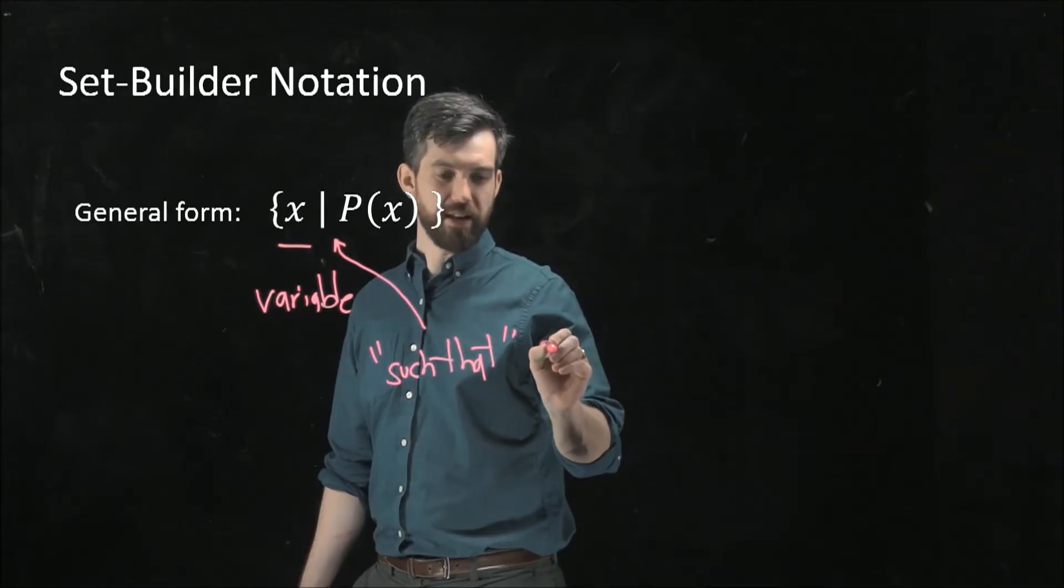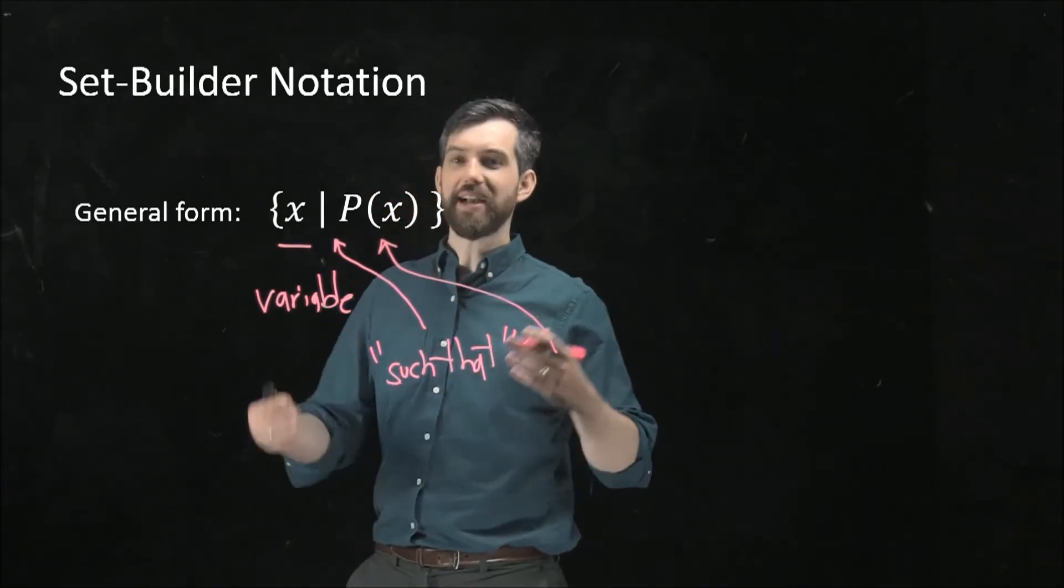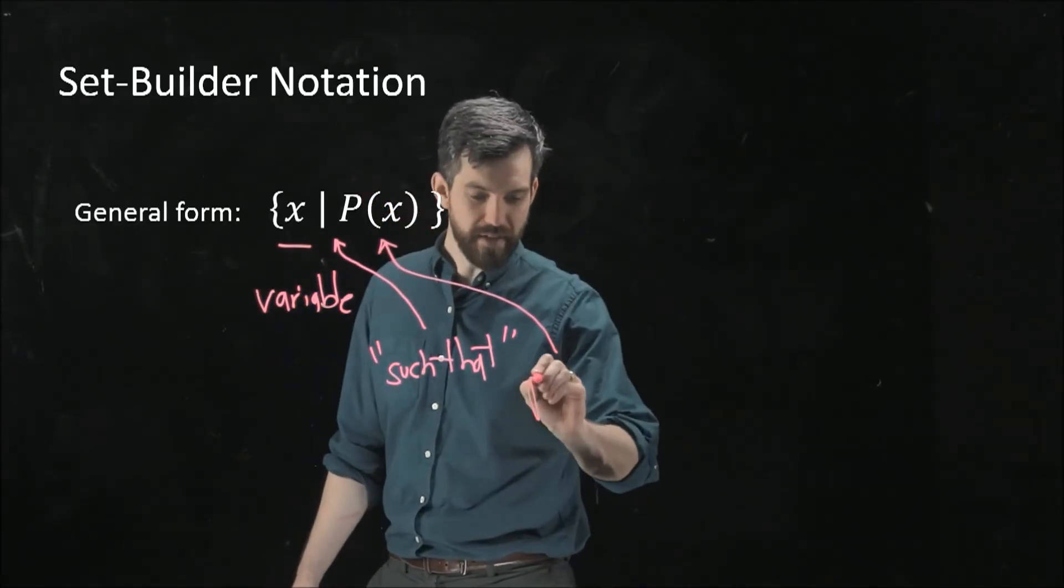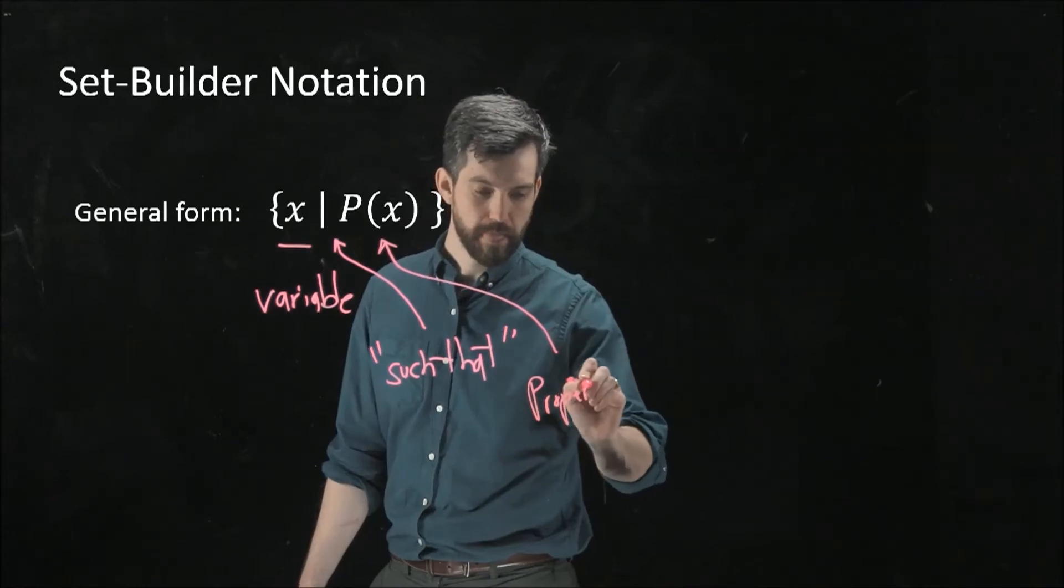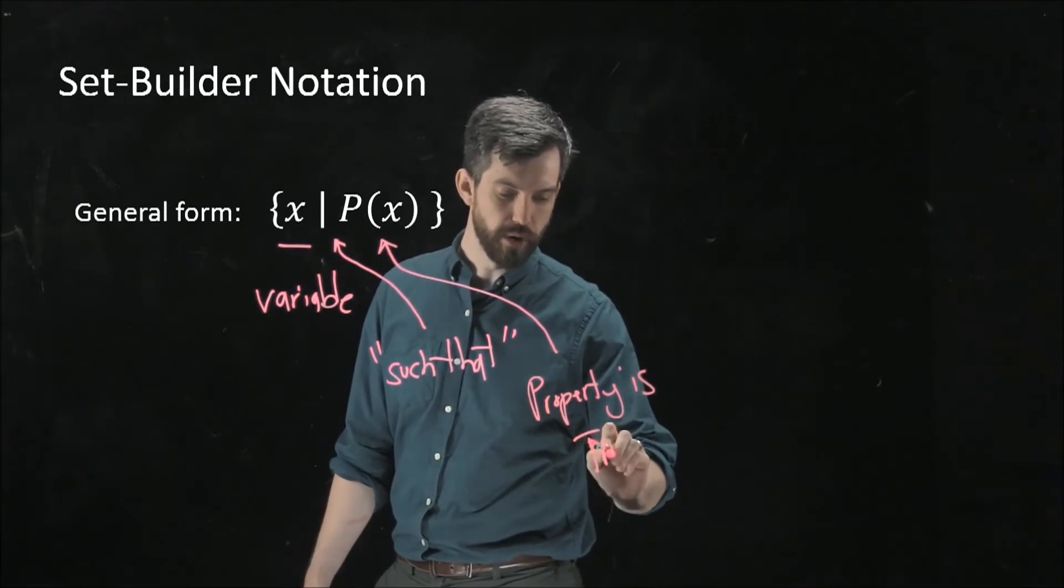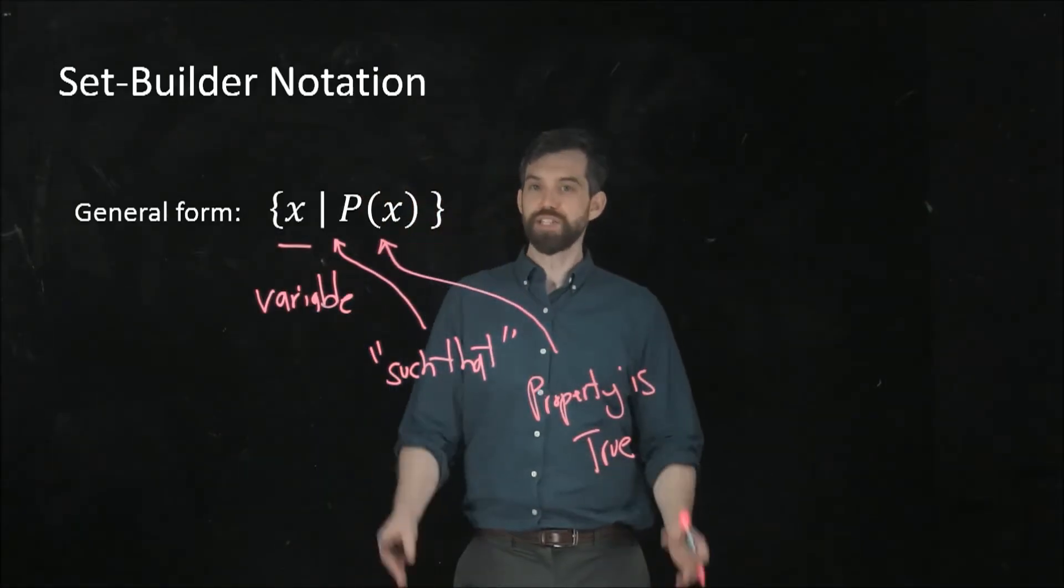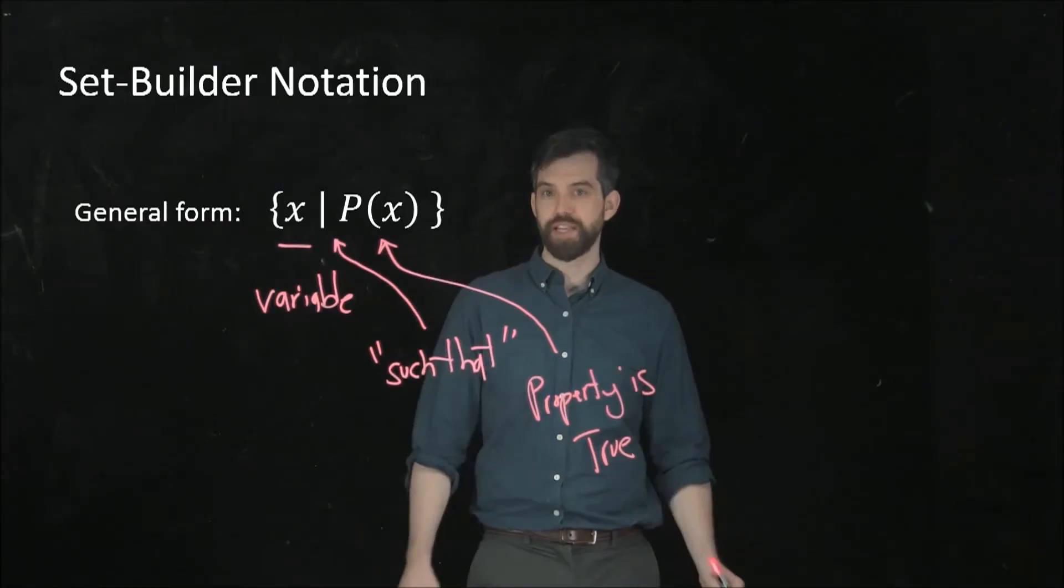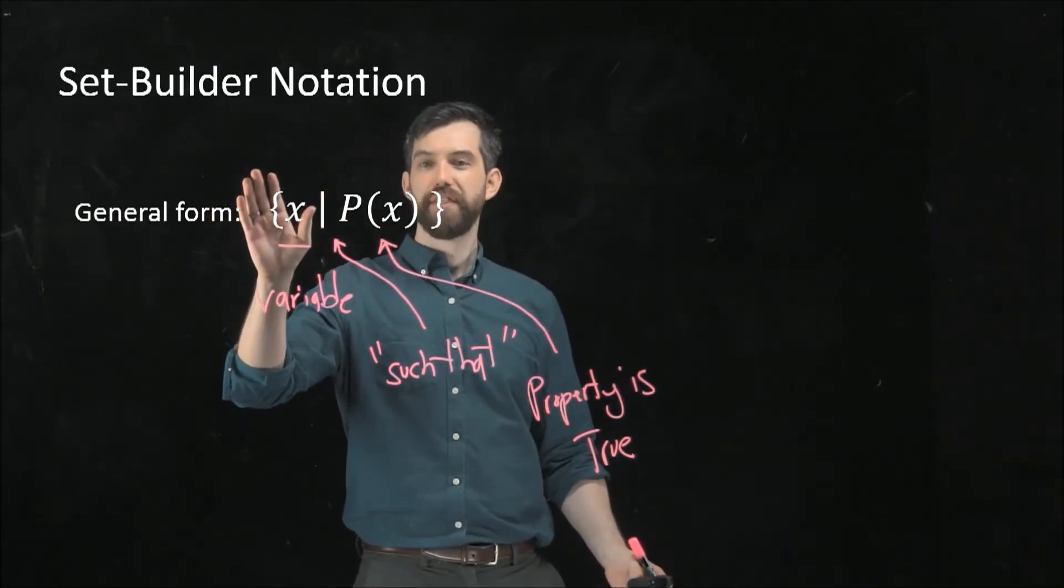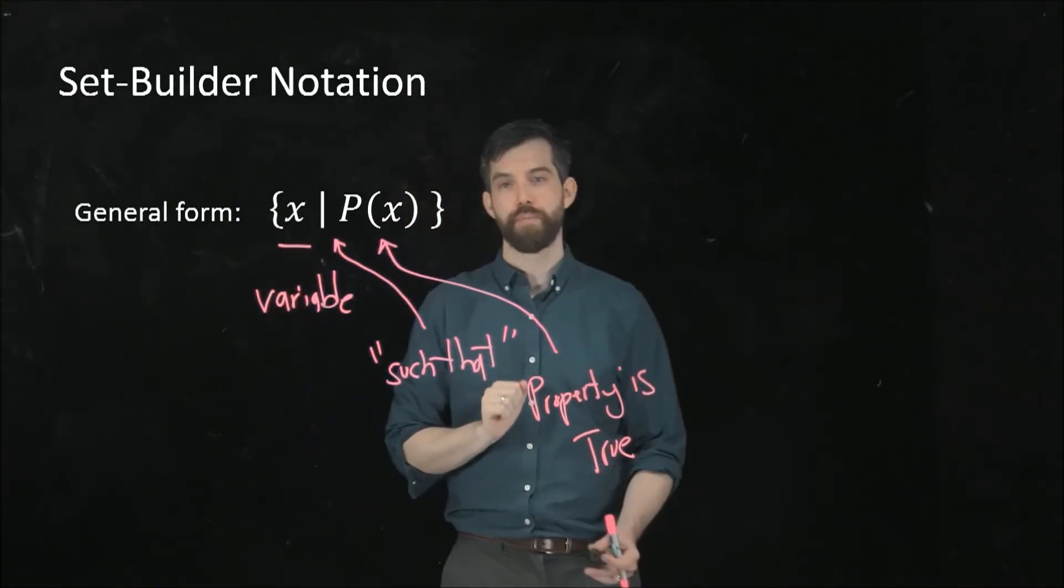And then finally I have this p of x here. And p(x) is some property that depends on the variable x. So I want to have a property, and I want it to be true. So some property that I'm claiming is true. So this is sort of weird, but the way I want to read this is this is the set of the variables x such that the x has some particular property.